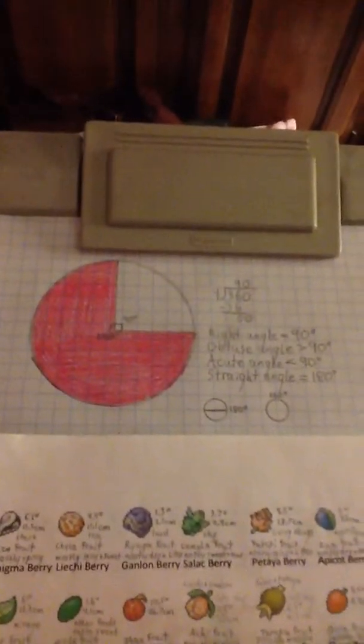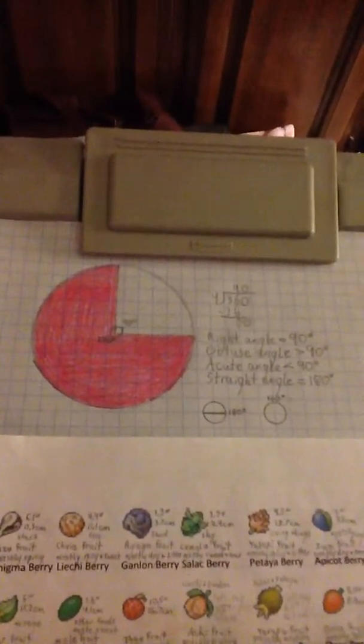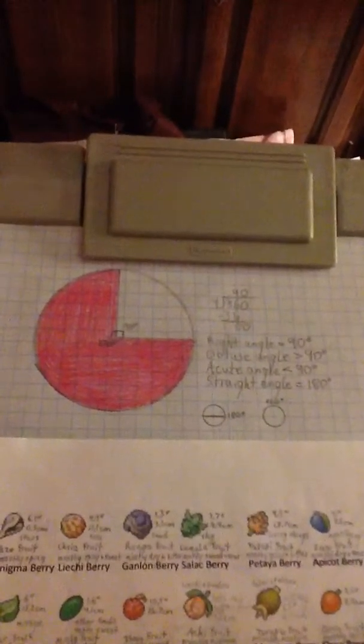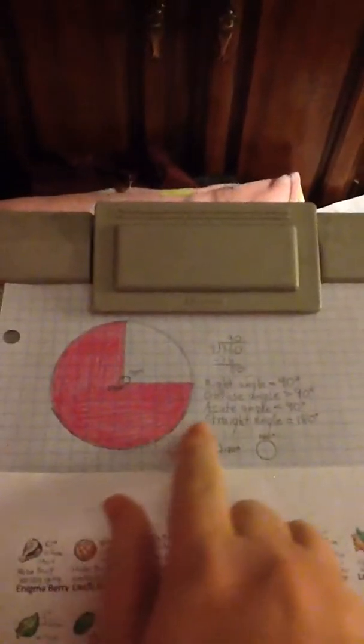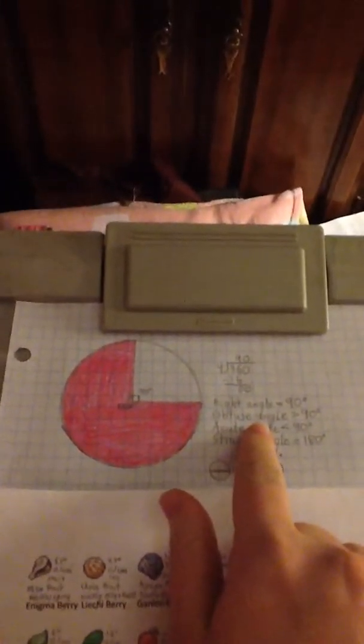The circle is 360 degrees, so you divide that by 4. 25% or one-fourth of a circle is 90 degrees, which is incidentally called a right angle.